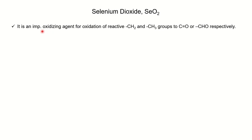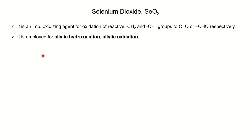Selenium dioxide is an important oxidizing agent for oxidation of CH2 and methyl groups to carbonyl and aldehyde respectively. If you have an active methylene CH2 group, it will convert into a C=O group, and if you have a methyl group, it will convert into an aldehyde. Active methylene means if you have CH2 or CH3 group alpha to the carbonyl group, then we will see the formation of C=O and CHO groups respectively. It is also employed for allylic hydroxylation or allylic oxidation.